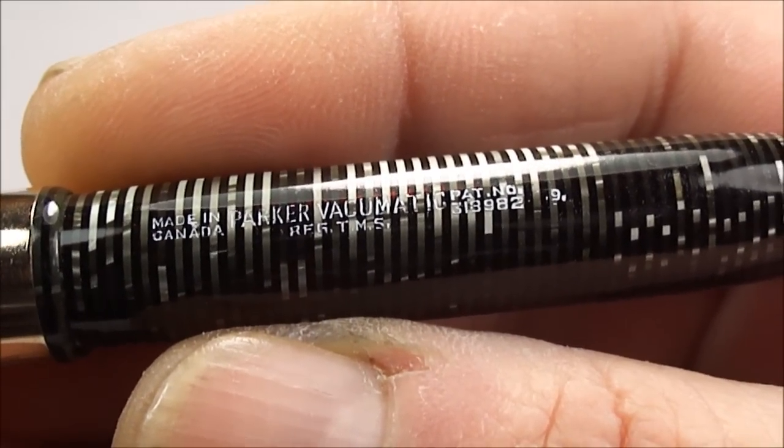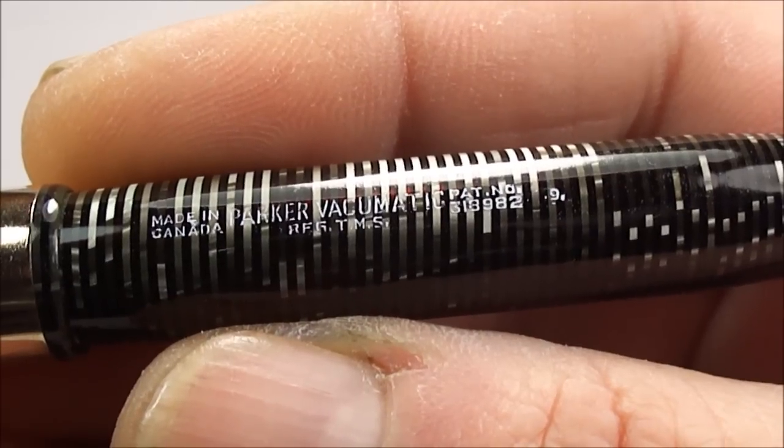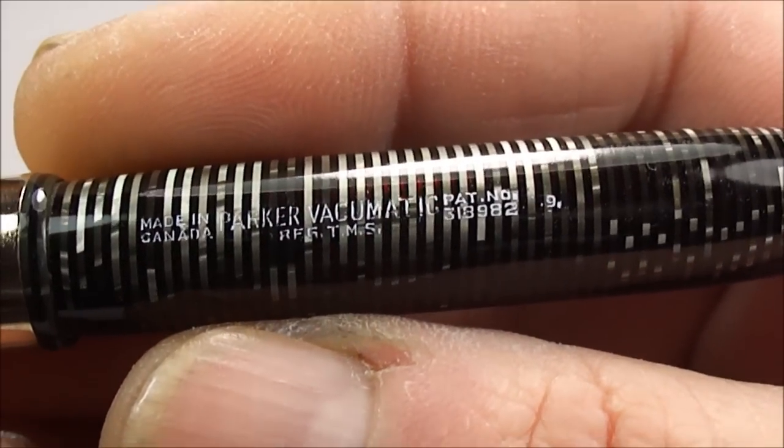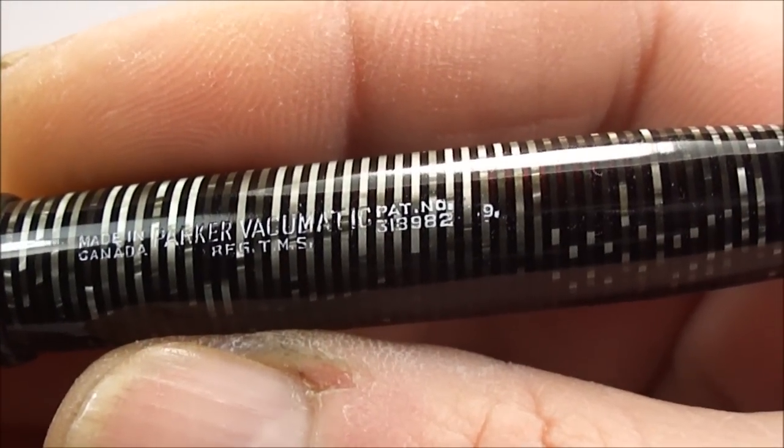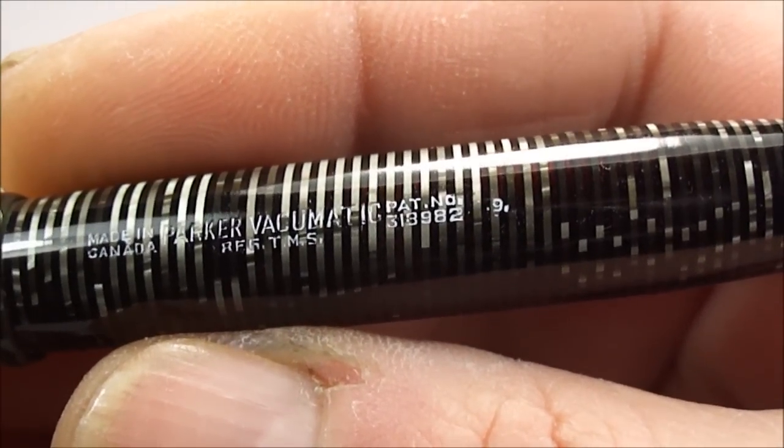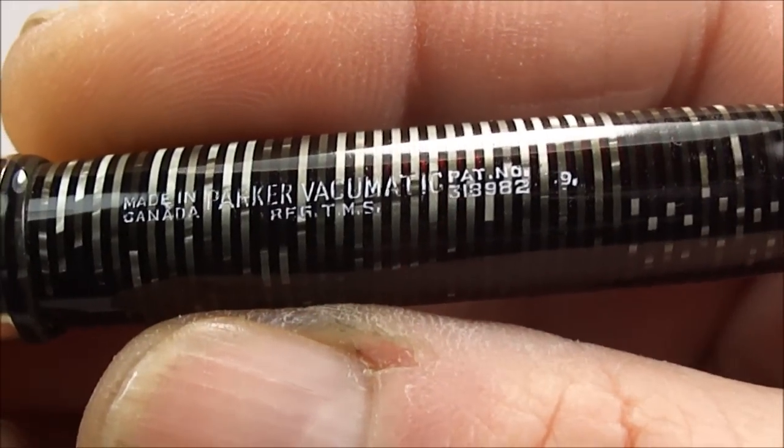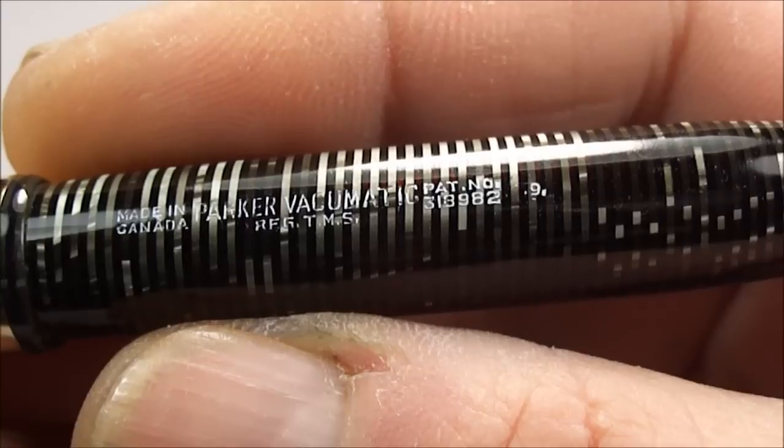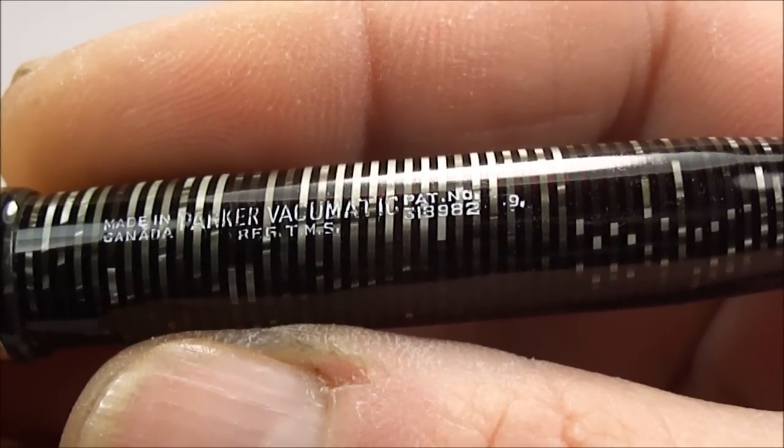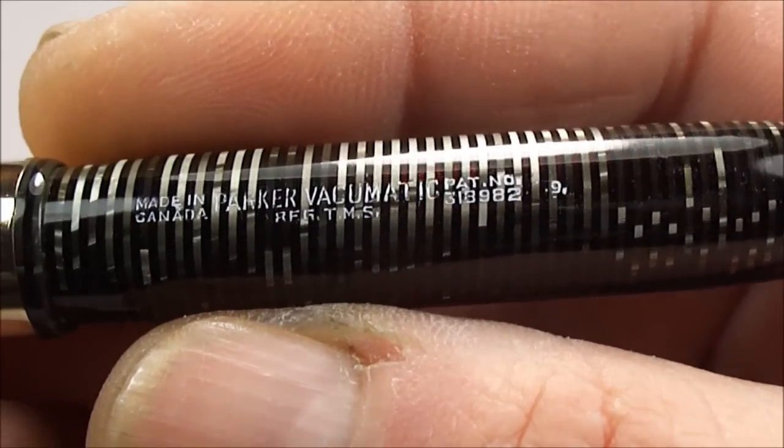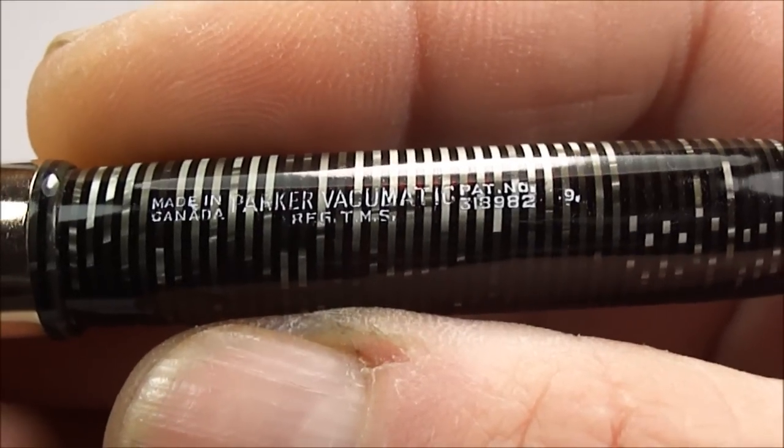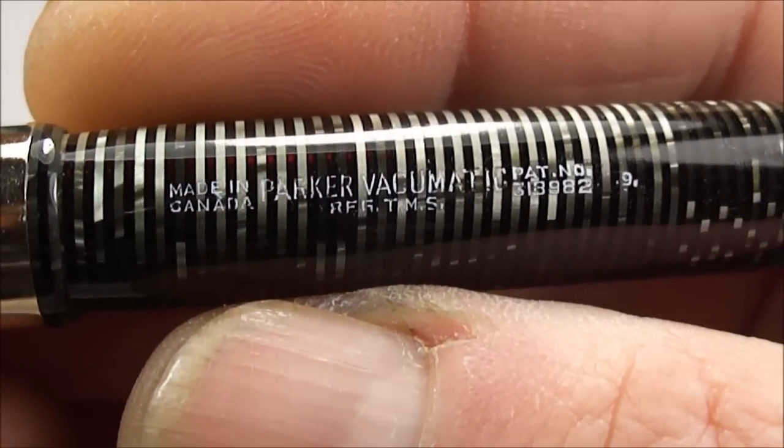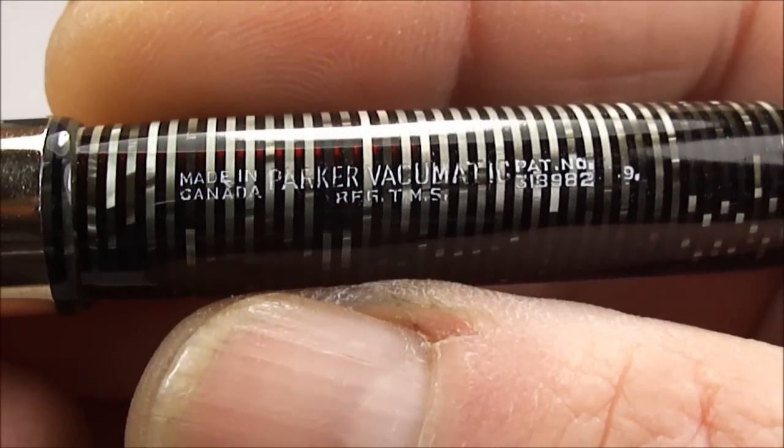And the pack number on this particular one is 318982. And then last but not least what you'll notice all the way to the right of the imprint there you'll notice it has a number 9 with the 3 dots, which is indicating to us that this pen was made in the first quarter of 1939. So there you have the imprint nice and clear, we've highlighted it for you so you can actually read it.